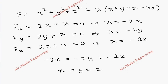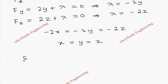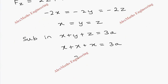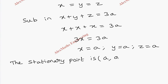We have the relation x = y = z. Substituting into the constraint x + y + z = 3a, we get x + x + x = 3a, so 3x = 3a, meaning x = a. Therefore y = a and z = a as well. The stationary point is (a, a, a).